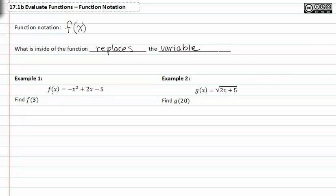So if we see in example one, we have f(x) is equal to negative x squared plus two x minus five, and we want to find f(3). They're asking us to put three in wherever there was an x in the original equation.